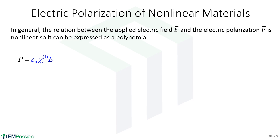A nonlinear material really entails how an electric field polarizes the material. The equation we've talked about up to now shows just a linear relationship — if we double the strength of the electric field, we double how much the material has been polarized. That's a linear relationship.